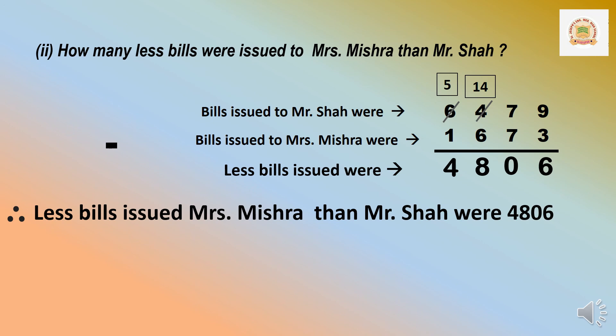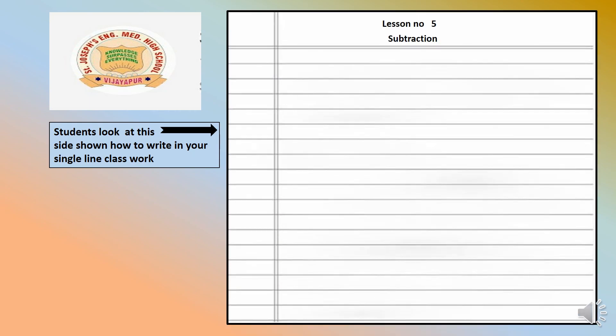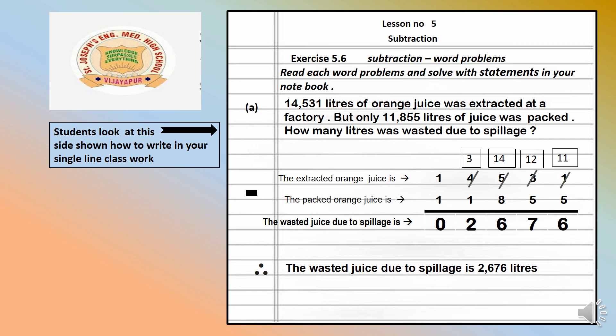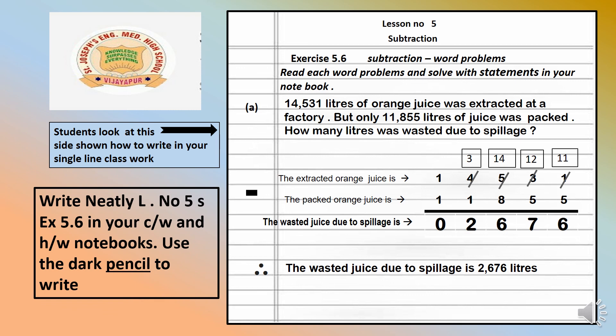This is the method: by writing each statement, we can easily find the answers. When you write the statement, children, you will come to know how the subtraction can be done easily. Without the statement, we cannot solve these word problems easily. So we have to write the statements then solve. In word problems, you have to write the numbers in a particular line, keeping numbers below each other. Open the classwork and write Exercise 5.6 of Lesson number 5 neatly in your classwork and homework notebook. Write compulsory homework also; it will give you more practice and clear your doubts.